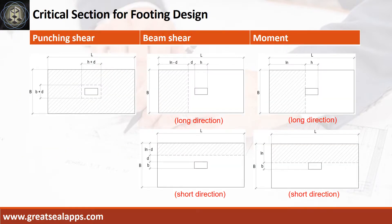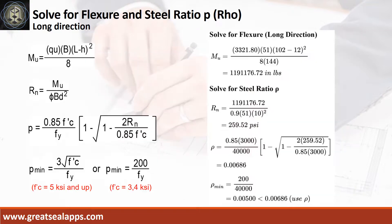Critical section diagrams for punching shear, beam shear, and moment evaluations. At long direction, given ultimate soil pressure equals 3,321.8 PSF, footing width equals 51 inches, footing length equals 102 inches, and column side equals 12 inches, the maximum moment is 1,191,176.72 inch-pounds.